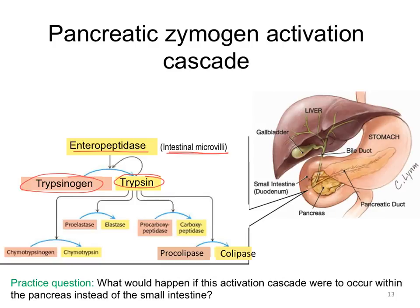Trypsin can also cleave trypsinogen, making yet more active trypsin. And it's the trypsin enzyme that cleaves the inactivating peptides from the other digestive proteases, as well as from a protein that's required for lipase activity.